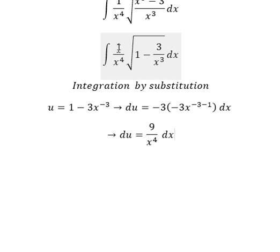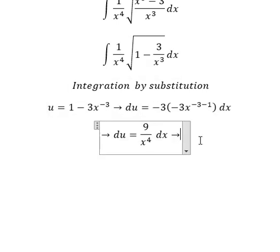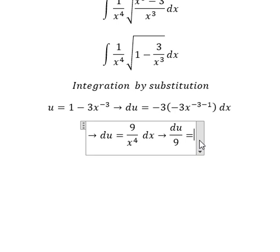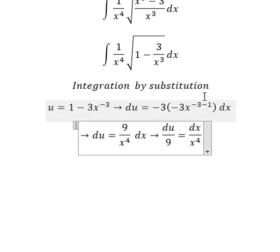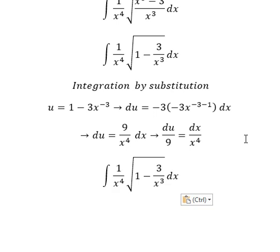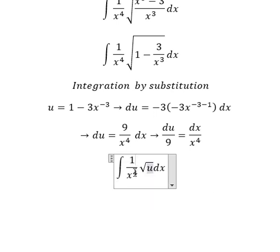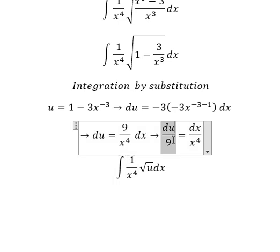Because we don't have number 9, so we divide both sides by number 9. So this one we change for u, this one with the x we change for the u over number 9.